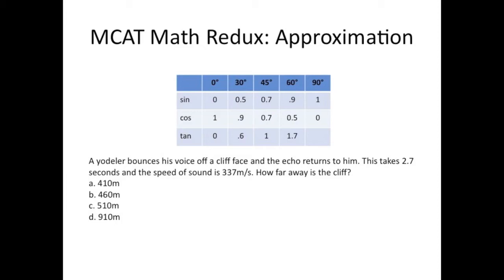A yodeler bounces his voice off a cliff face, and the echo returns to him. This takes 2.7 seconds, and the speed of sound is 337 meters per second. How far away is the cliff? So, right away, I'm going to treat 337 as 340.